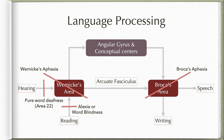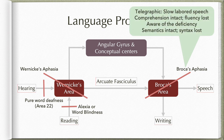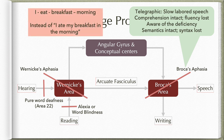Complete contrast to this is Broca's aphasia — injury to Broca's area. Here the speech is telegraphic: slow and labored. The patient has absolutely intact comprehension but fluency is lost, and the patient is painfully aware of the deficiency. Semantics are intact (correct words are chosen) but syntax is lost — the patient cannot join words with proper conjunctions. For example, instead of 'I ate my breakfast in the morning,' the patient says 'I eat breakfast morning.'